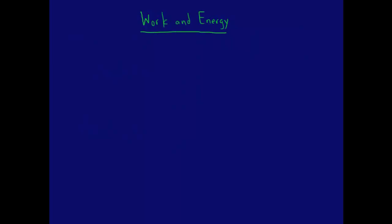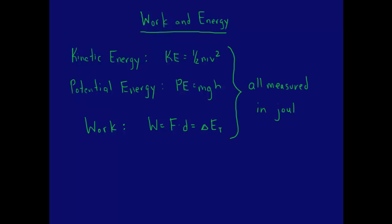Work and energy. The equation for kinetic energy is ke equals one-half mv squared. The equation for potential energy is pe equals mgh. The equation for work is force times displacement. Remember that these have to be in the same direction. The work done equals the change in total energy of the object. All of these are measured in joules.